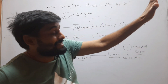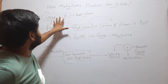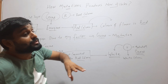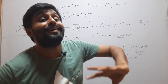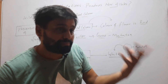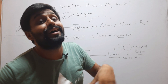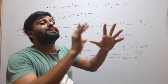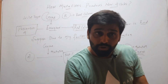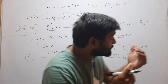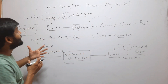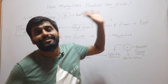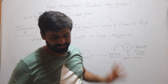Suppose we have any gene and a mutation occurs in that gene. The function of that gene may alter or it may become non-functional. Now we have an alternative form of the gene, which is called an allele. In this way, mutation produces new alleles.